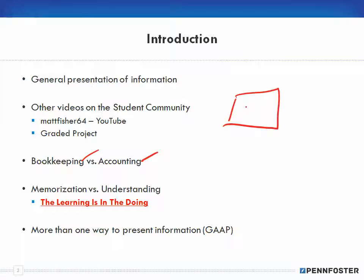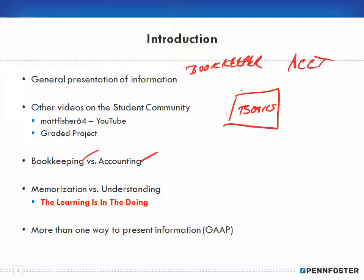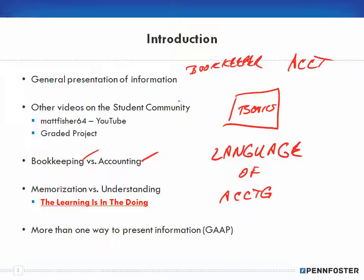A business has its set of books, and there are actually two different people that work on those books: you have your bookkeeper and you have your accountant. Because they're working on the same set of books, both have to be able to speak the same language — the language of accounting. The difference is that a bookkeeper pretty much does data entry.